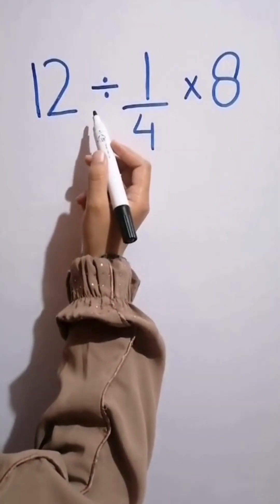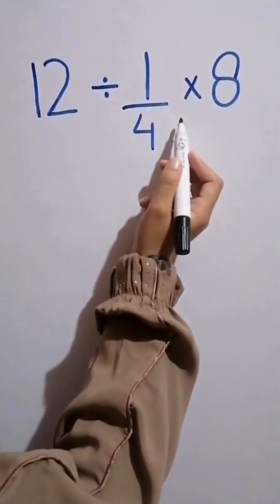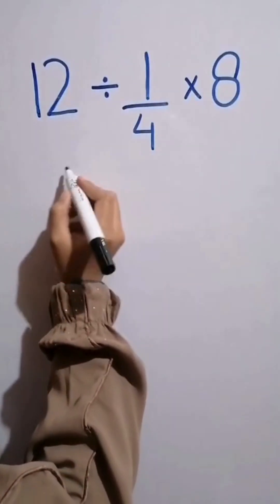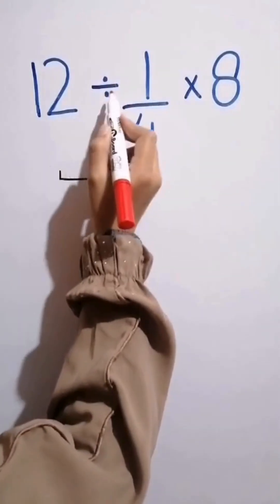As you can see on the screen in this expression we have one division sign followed by a multiplication sign. As division and multiplication have equal priority and we work from left to right, we do division between 12 and 1 over 4.